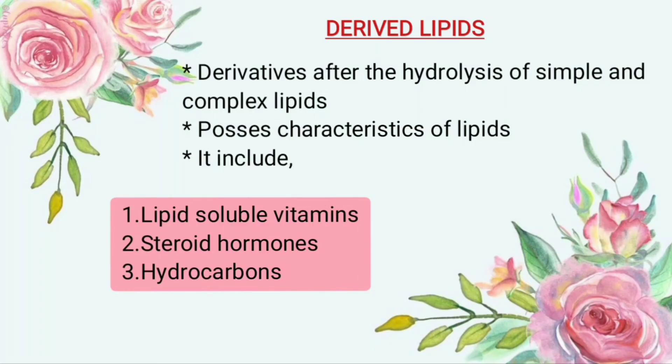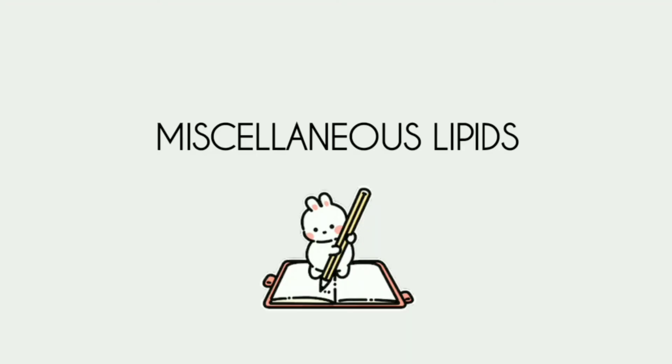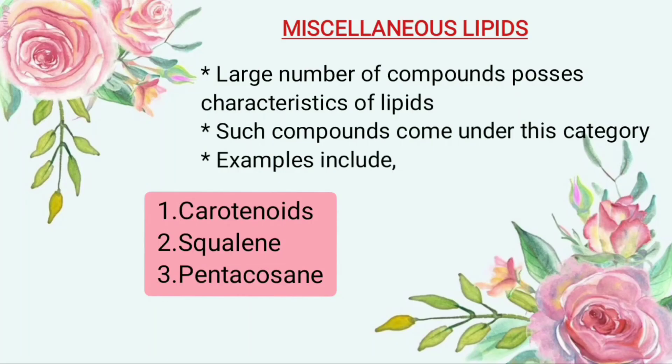Derived lipids are derivatives of simple and complex lipids obtained after hydrolysis. These possess characteristics of lipids. Examples include lipid-soluble vitamins, steroid hormones, and hydrocarbons. Miscellaneous lipids comprise a large number of compounds that possess characteristics of lipids. Examples include carotenoids, squalene, and pentacosane.